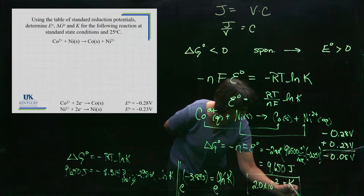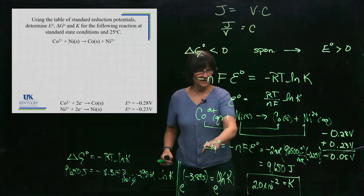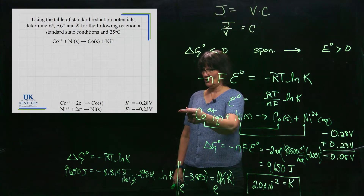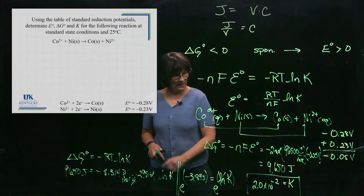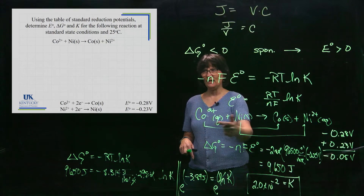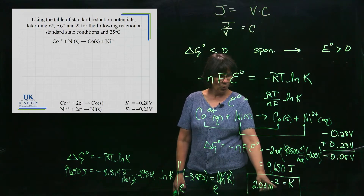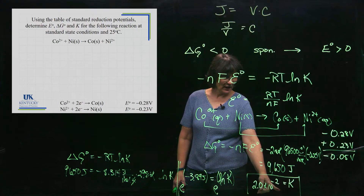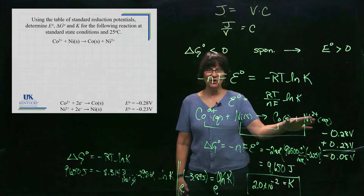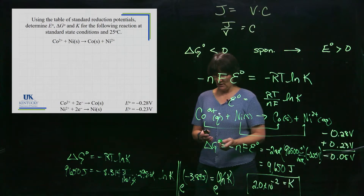Let's check consistency: a negative E° means spontaneous in the reverse direction, which gives a positive ΔG° — and it did. The reaction runs in reverse to reach equilibrium, so at equilibrium there will be more reactants than products, giving K less than one (2.0 × 10⁻²). All three values fit together consistently.